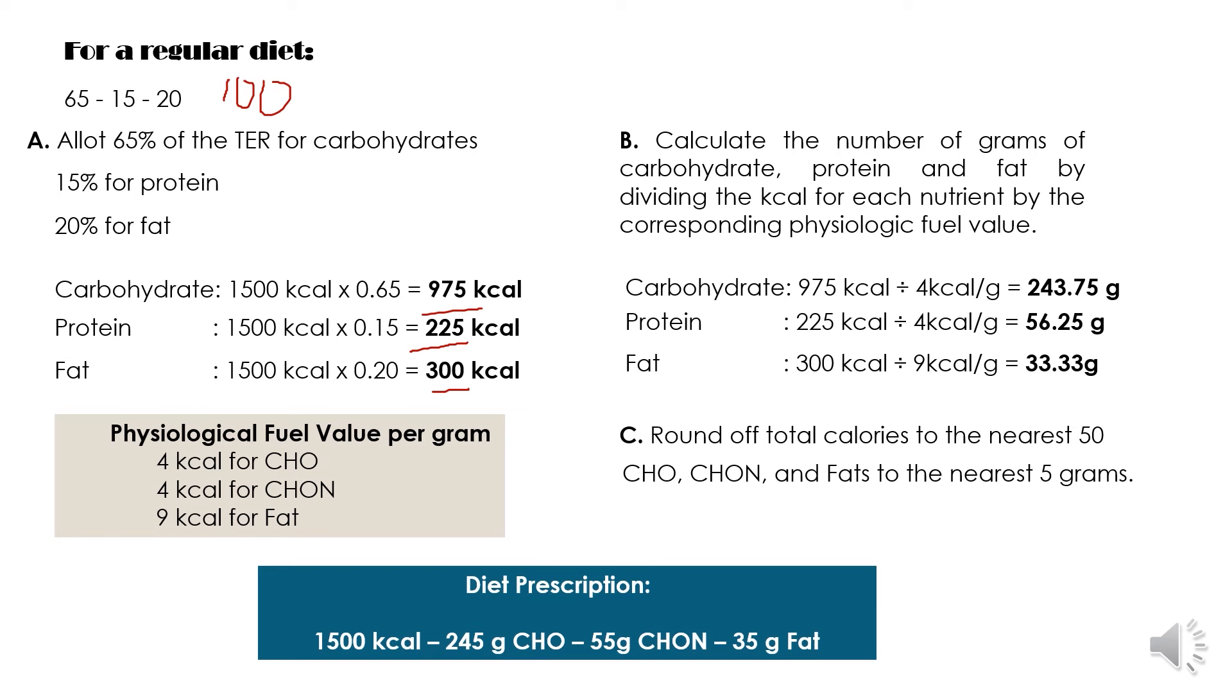Which will give you now your diet prescription as 1500 kilocalories, 245 grams carbohydrates, 55 grams protein and 35 grams of fat. You can now use this diet prescription to make a meal plan.